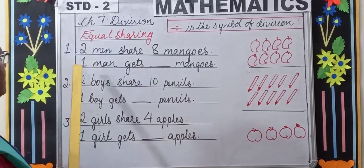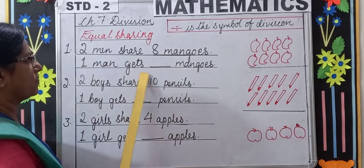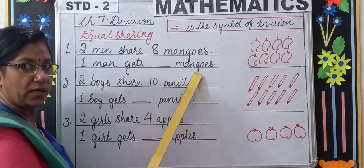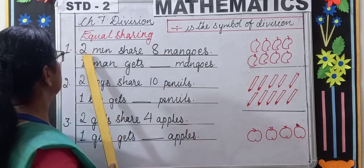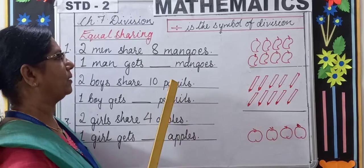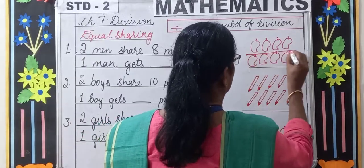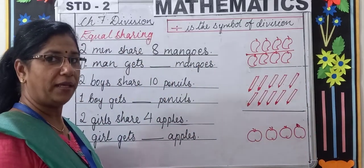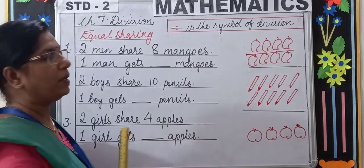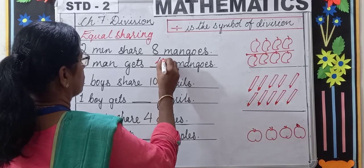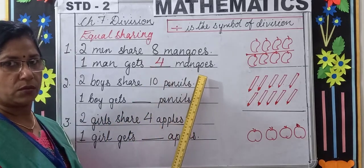Let's go to the first example. Two men share 8 mangoes. One man gets how many mangoes? We have 8 mangoes total and two men. We have to group them equally — you will get two groups. How many mangoes are in each group? 4 mangoes. So one man gets 4 mangoes.